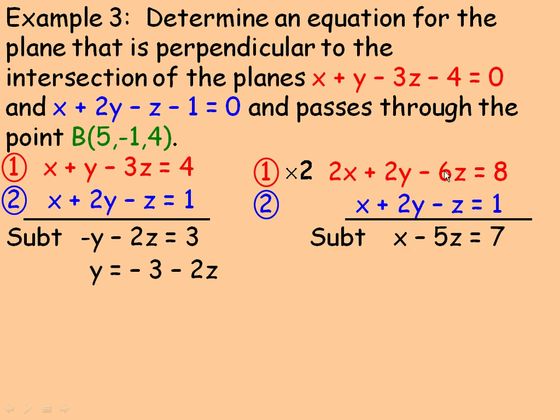And of course the 2y's are the same so we subtract again. 2x minus 1x is x, the y's subtract is 0, negative 6z minus negative z is the same as negative 6z plus z so it is negative 5z, and 8 minus 1 is 7. So solving for x we will rearrange and bring the 5z over here and x would be 7 plus 5z.